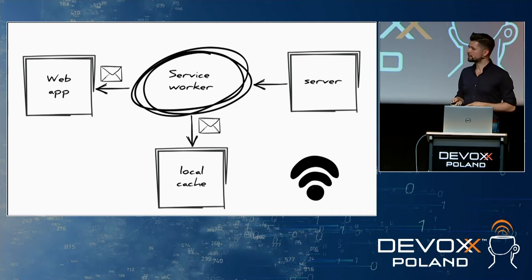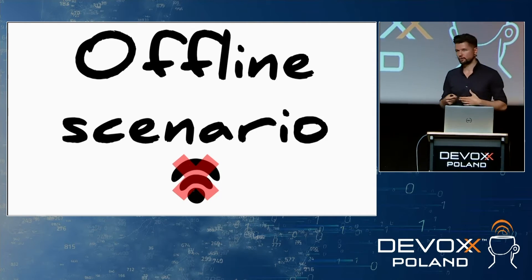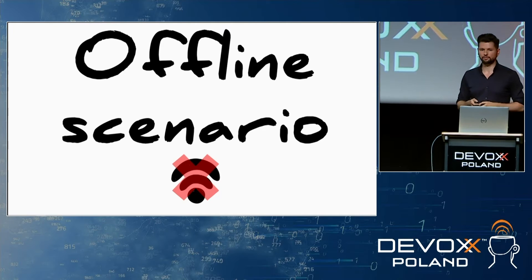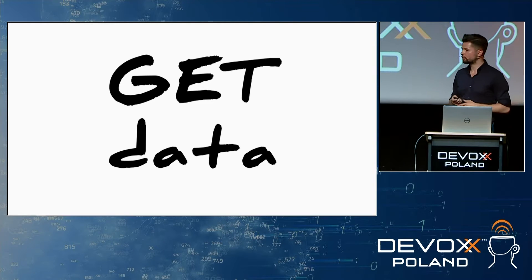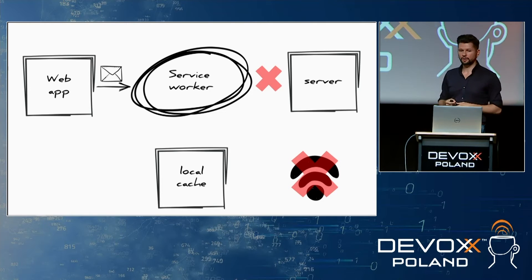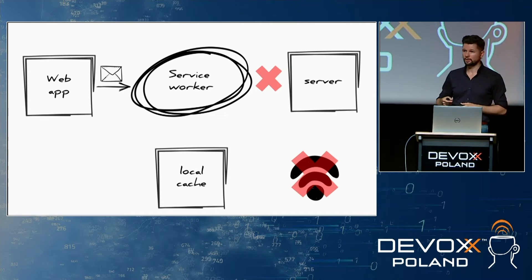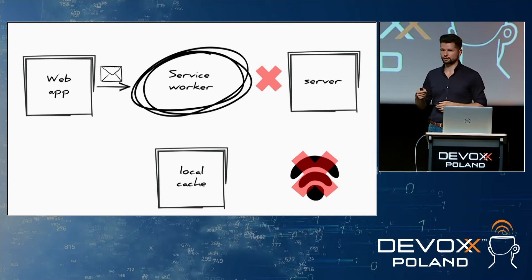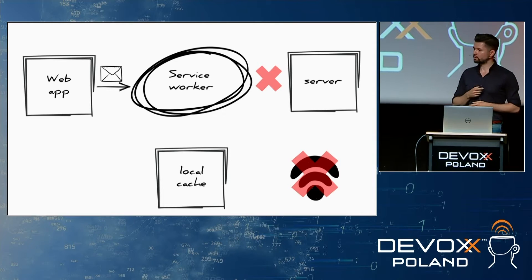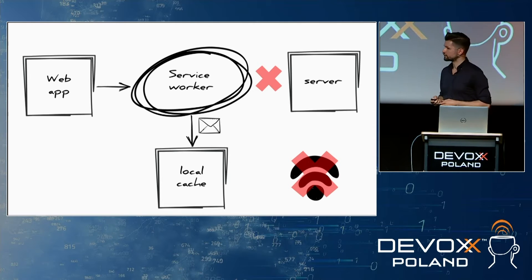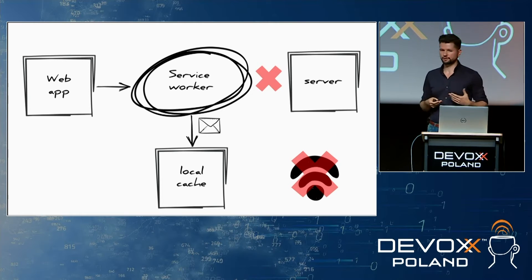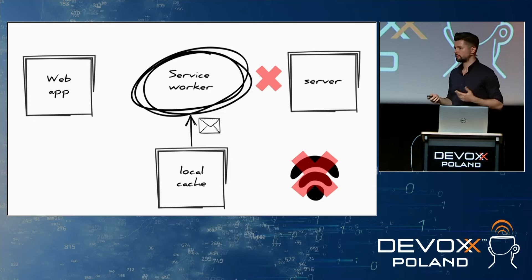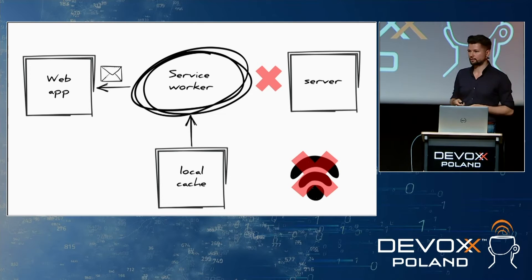In addition, the service worker stores the data from the response in local cache using the proper URL. In the offline scenario, when we don't have access to the application server and the application wants to get the same data, it sends a GET request again. The service worker knows there is no connection, so it looks into the local cache and checks if data exists under the requested URL. If it does, it retrieves and returns it to the application.